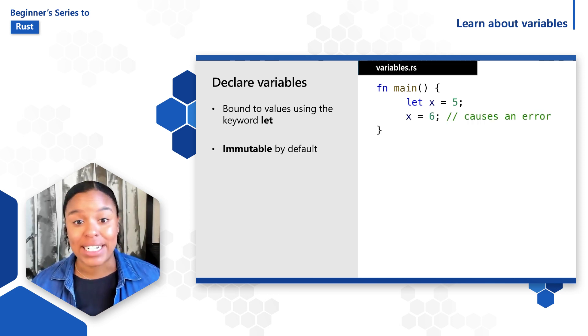By default, variable bindings are immutable. Immutable means that after a value is bound to a name, the value cannot be changed. So if I declare a variable let x is equal to 5, I cannot then later try to change the value of x with the statement x is equal to 6. This results in a compiler error.